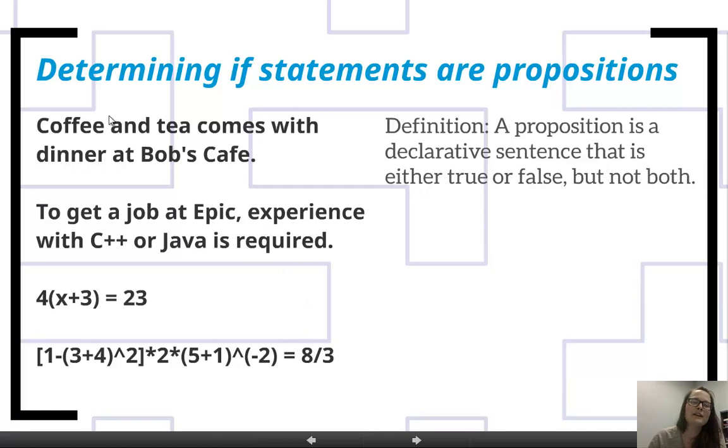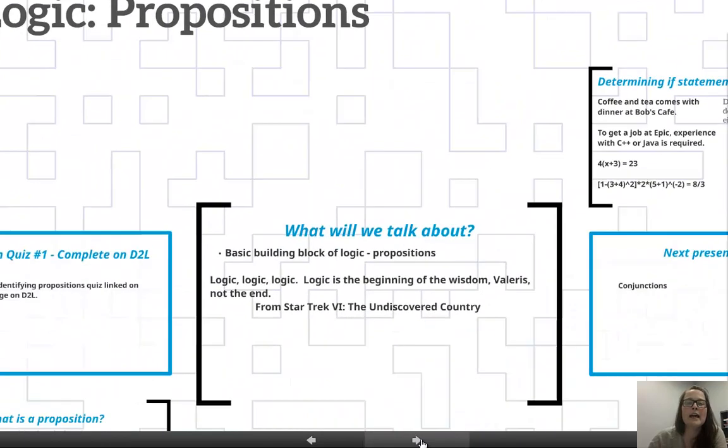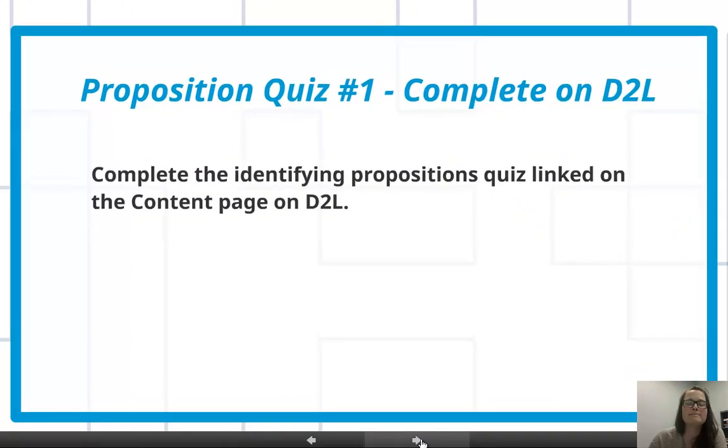Just to review here, this first one's a proposition, second one's a proposition, third one is not a proposition, and fourth one is a proposition. When you're doing that quiz on D2L, keep this definition in mind. A proposition is a declarative sentence that is either true or false, but not both. It's just two short questions there, and you'll be able to have two attempts.